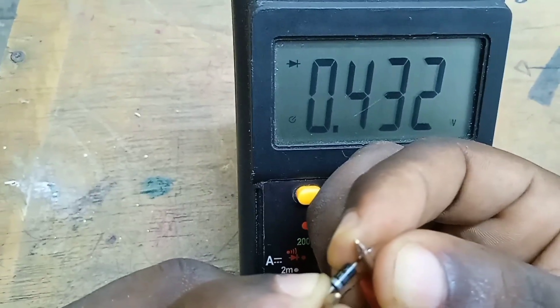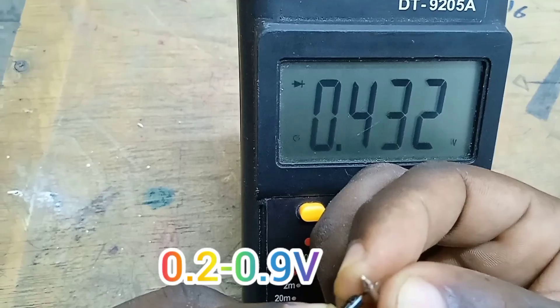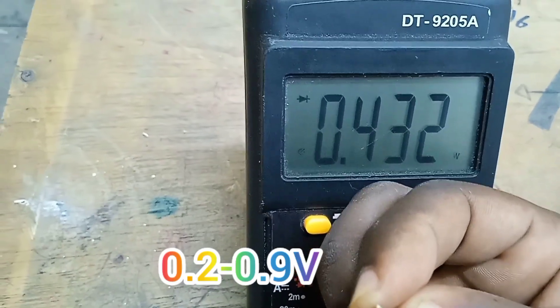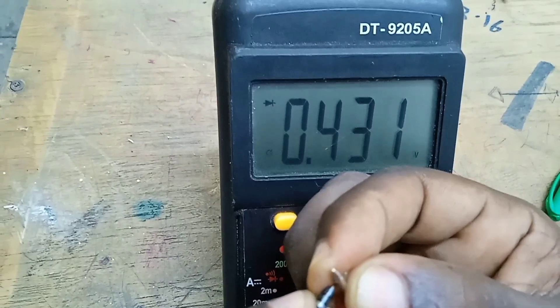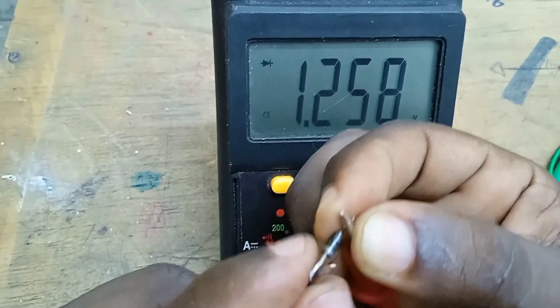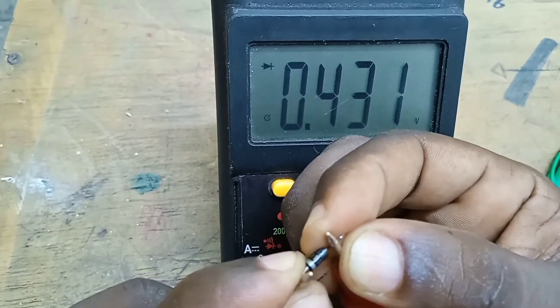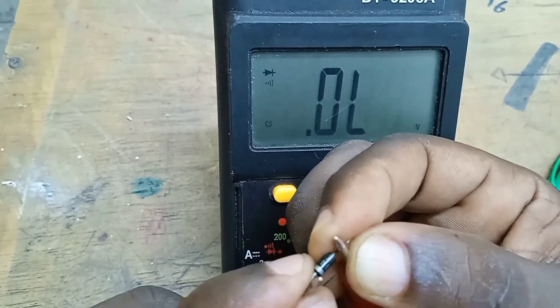For a good diode, the reading will be between 0.2 to 0.9 volts. This is the forward bias voltage. Forward bias voltage is the voltage required for the diode to conduct current when forward biased.